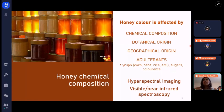The chemical composition affects the color of the honey, specifically the concentration of each constituent. It varies a lot with botanical origin, geographical origin, and more importantly, the adulterants. Usually syrups are systematically added to honey samples, like corn, cane, rice among others, and also sugars and colorants.